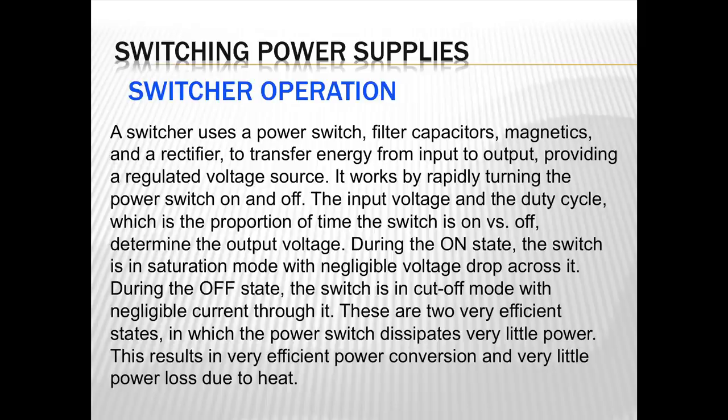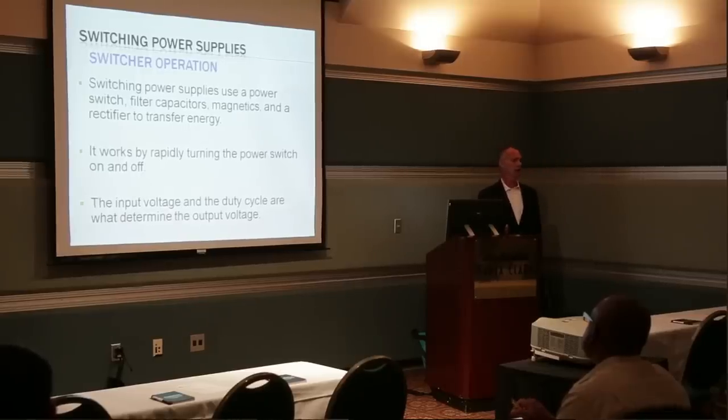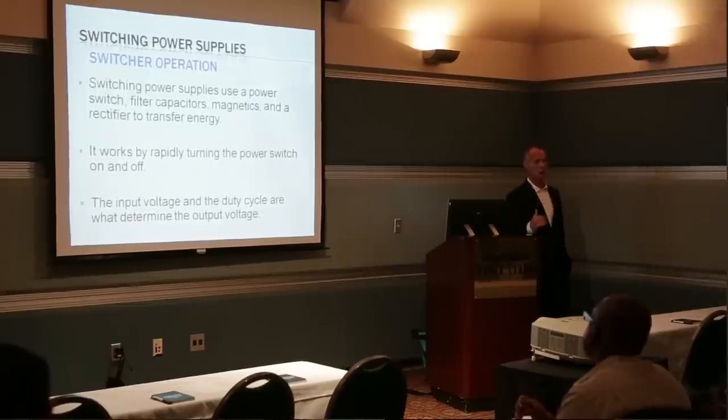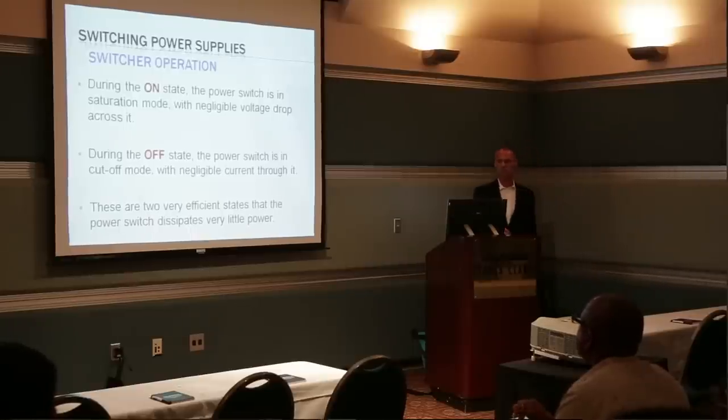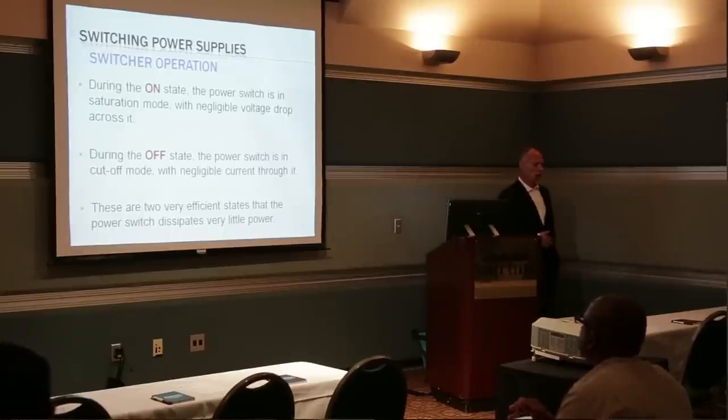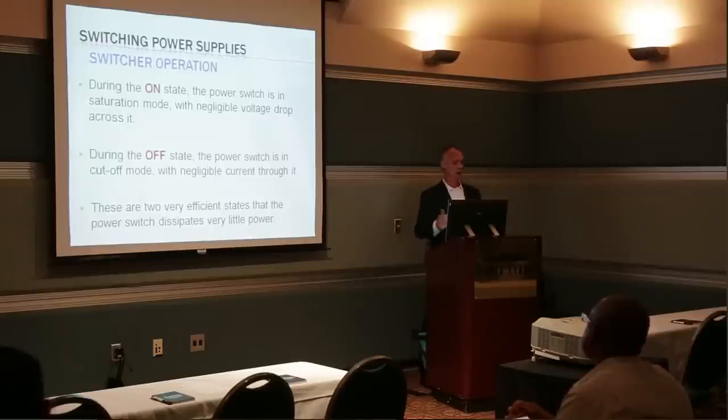By definition, a switching power supply uses a power switch, magnetics, filter caps, and a rectifier to transfer energy from an input to an output source, providing a regulated voltage. It works by rapidly turning that power switch on and off. The output voltage is calculated by the input voltage and the duty cycle — the proportion of time the switch is on versus off. During the on state (saturation mode), there's negligible voltage drop; in the off state, no current flows. These efficient states mean very little power is dissipated.